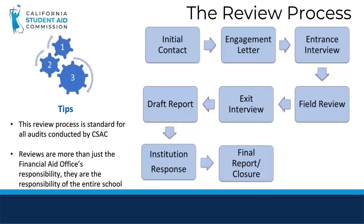The next step is the engagement letter. After the initial contact, school staff will receive an engagement letter confirming the review date and itemizing the information and documentation that the school needs to submit to the auditor. These items include, but are not limited to, school catalogs, student expense budgets, policies and procedures for the review period, and a completed program survey.